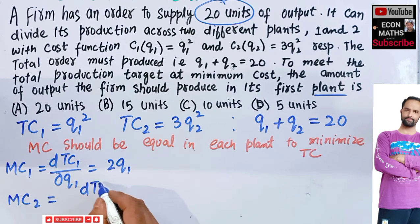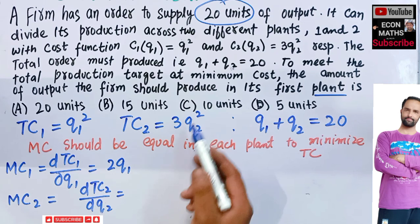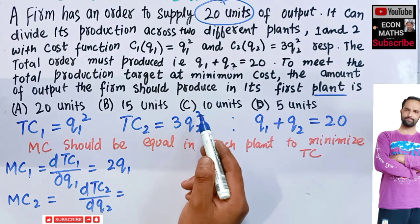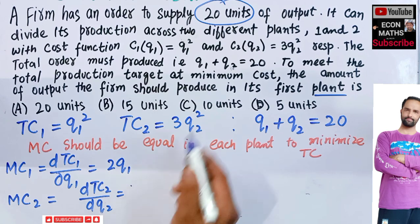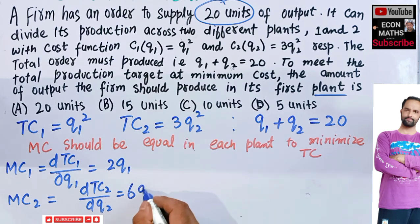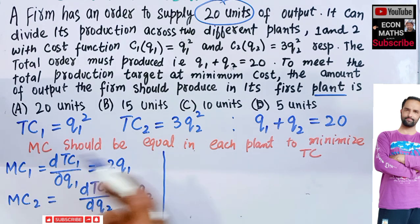Symmetrically, the marginal cost in Plant 2 is equal to the derivative of total cost in Plant 2 with respect to Q2. Taking the derivative of 3Q2 squared with respect to Q2, by the power function rule, gives us 6Q2 as the marginal cost in Plant 2.